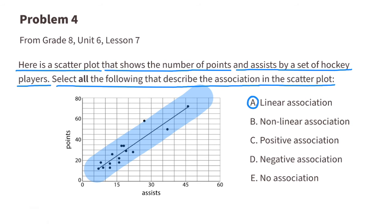There is a linear association because all the data on the scatter plot resembles a line, or somewhat resembles a line. Which means that I can't select the non-linear association. Since the data that's forming this line is moving upward, that means it's a positive association.